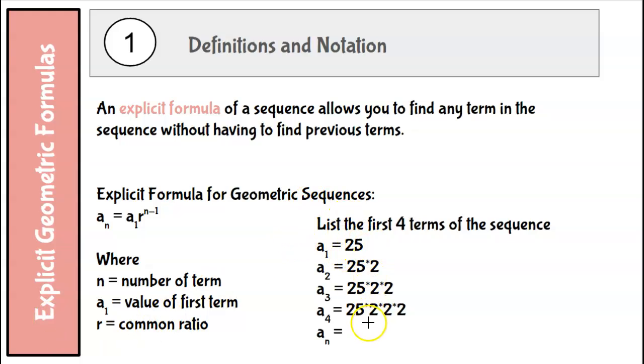So this was the previous example that we did where it was 25 and then 50 and then 100 and then 200. So you can see every time I'm multiplying by one 2, that's less than, that's one less than the term number.